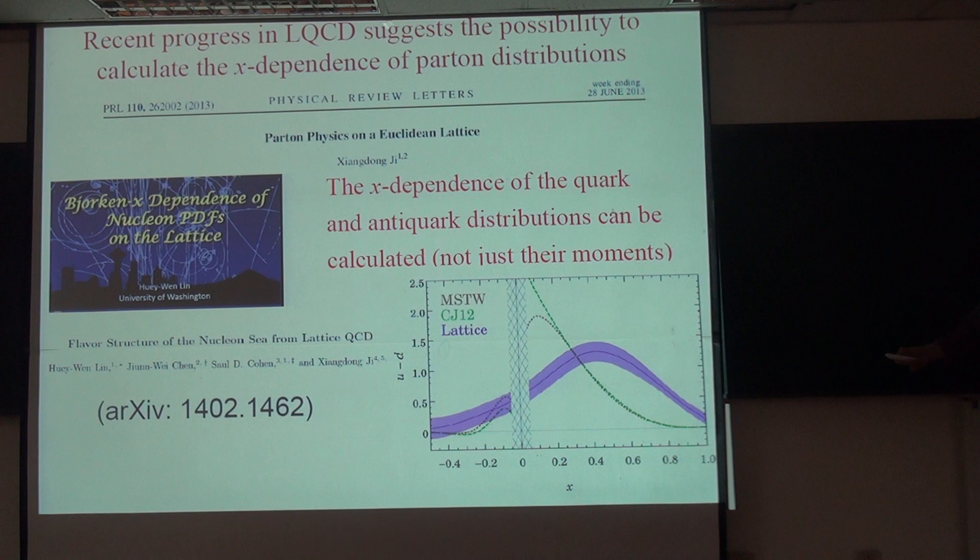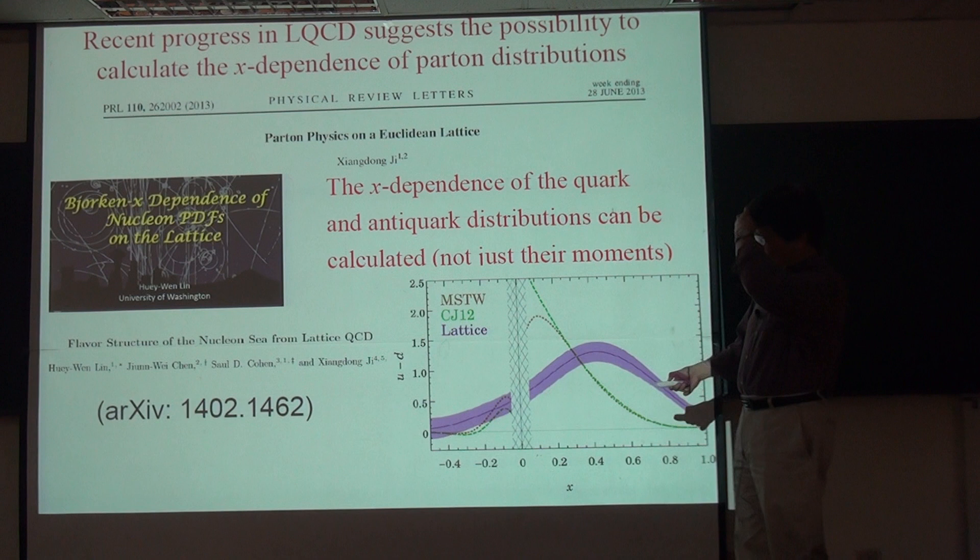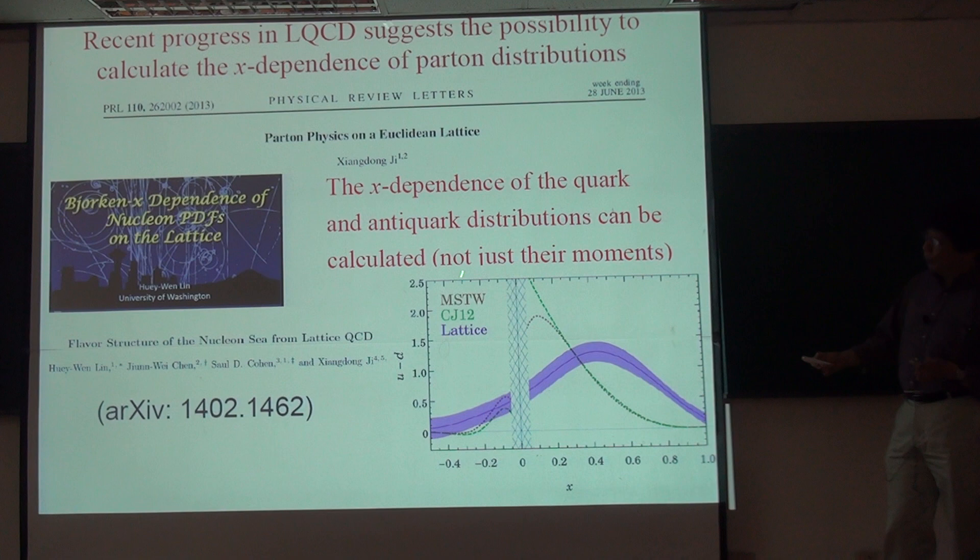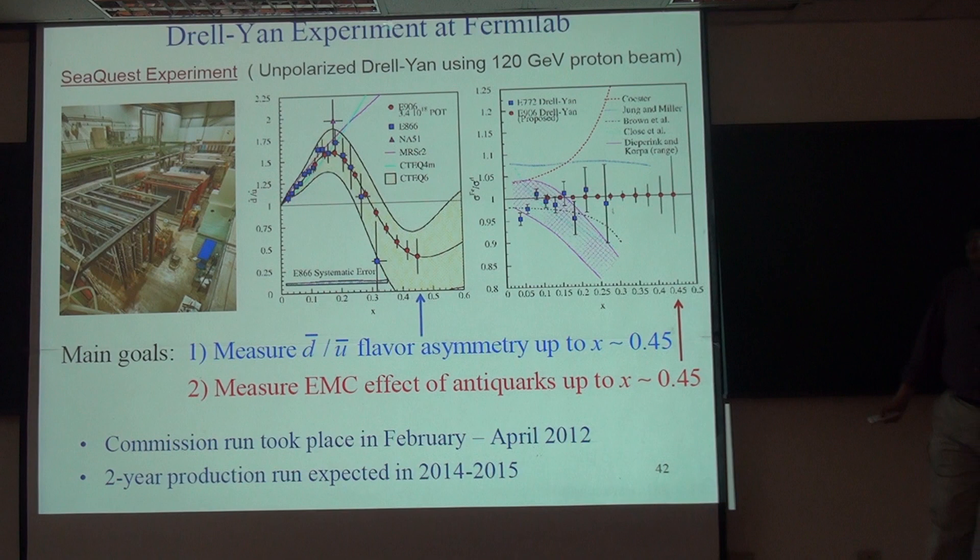Anyway, this is too much detail. I just want to point out that this x dependence actually is on the verge of being calculated by the lattice. I think including the recent work by Jane Wei, as he can probably discuss this. So hopefully one day the x distribution of this D-bar minus U-bar can be calculated the lattice accuracy to compare with the data.